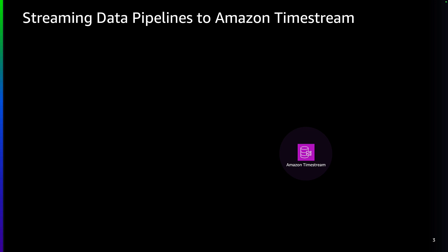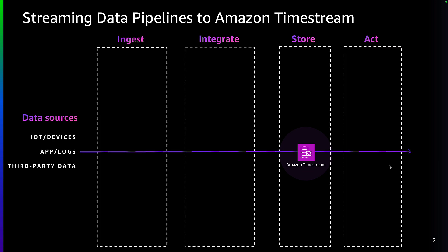Before we get into the demo, let me show you an end-to-end data journey that includes data flows, starting from ingesting time series data to storing them onto Timestream tables where it gets further analyzed for consumption by people or by other downstream applications or devices. The data flow starts with a number of streaming sources that includes data sources like sensors, social media, IoT devices, and log files generated from your web or mobile applications.